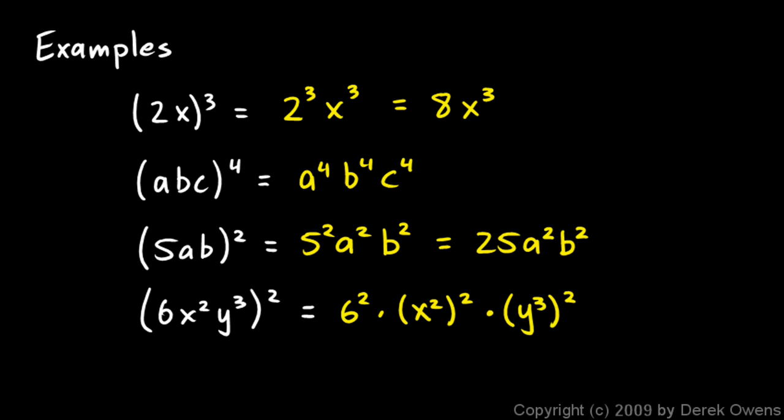Now let's work that out. 6 squared is 36. This x squared squared will be x to the 4th. And the y cubed squared will be y to the 6th. So the answer is 36x to the 4th, y to the 6th.